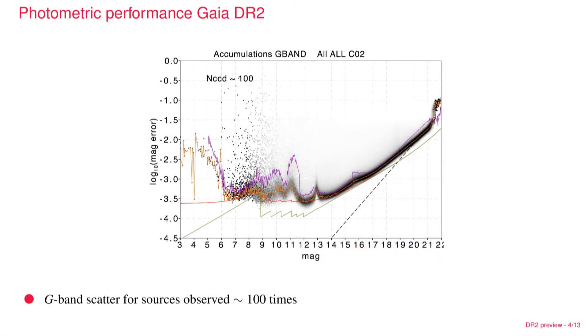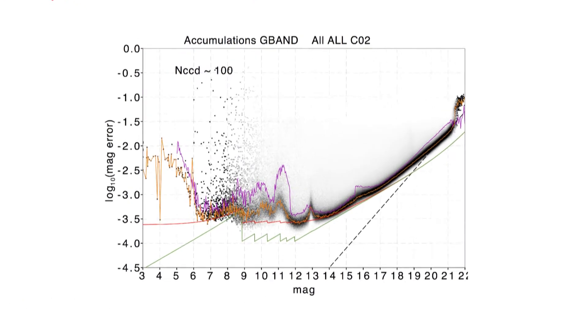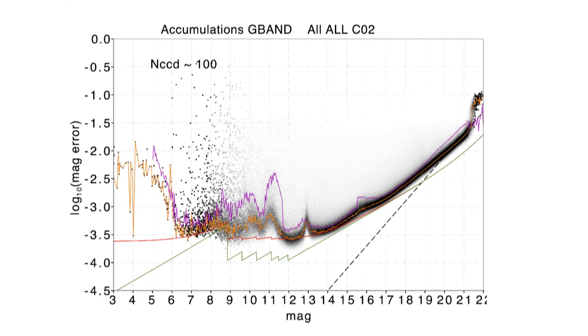This shows the photometric errors as a function of magnitude, based on stars that have at least 100 CCD measurements. You see the actual scatter in the observations, so this is a good representation of the actual errors being achieved in the photometry. There are a number of lines in there.